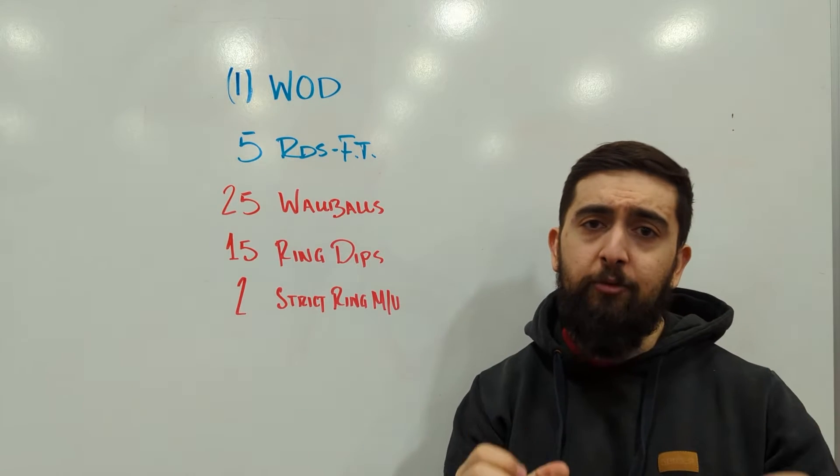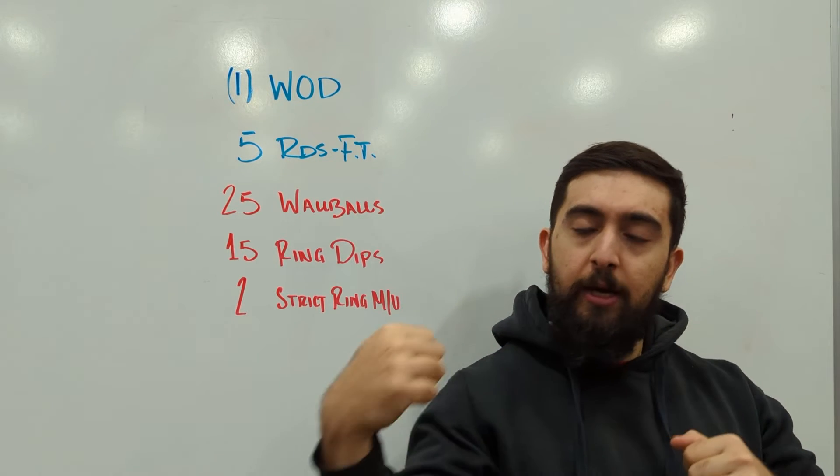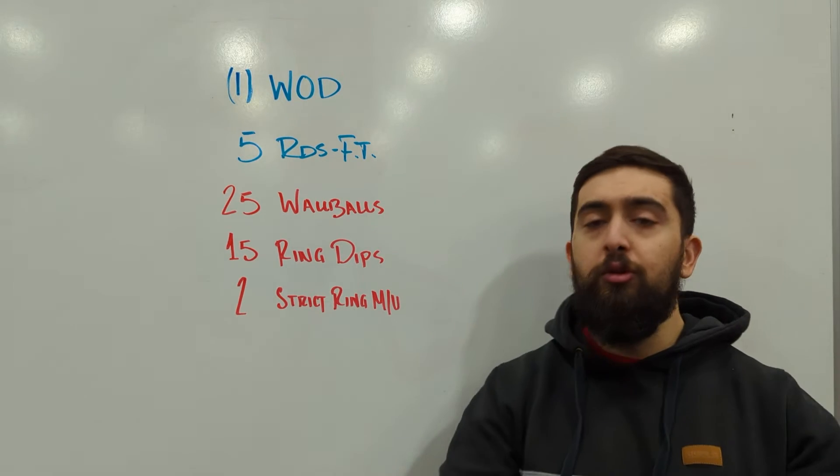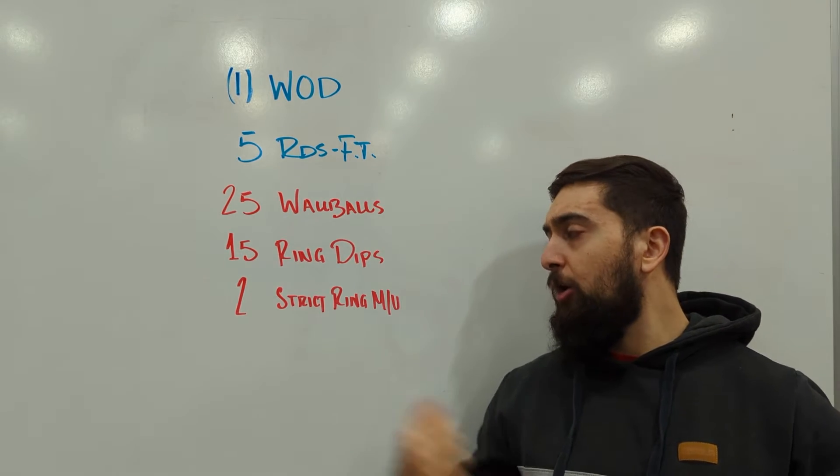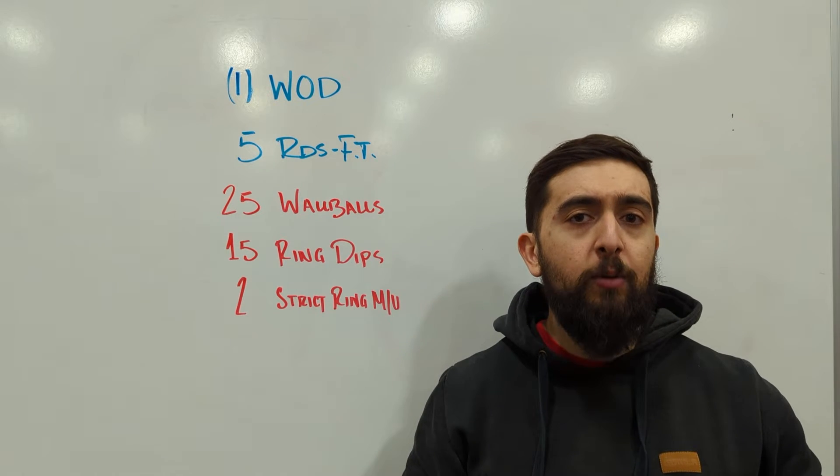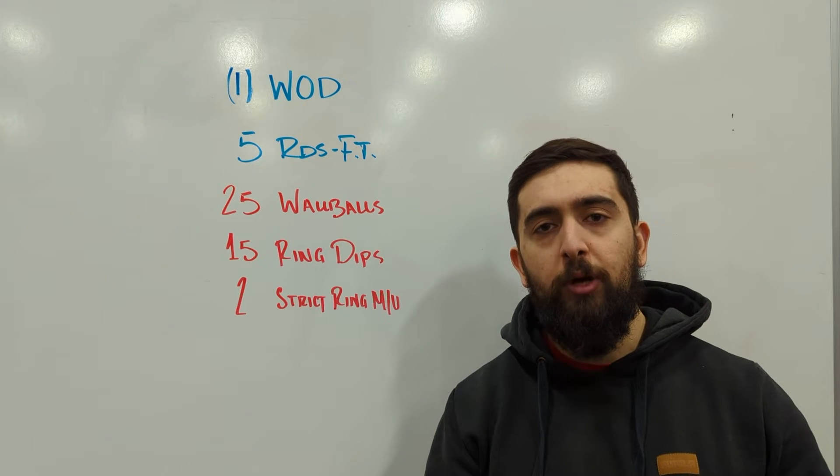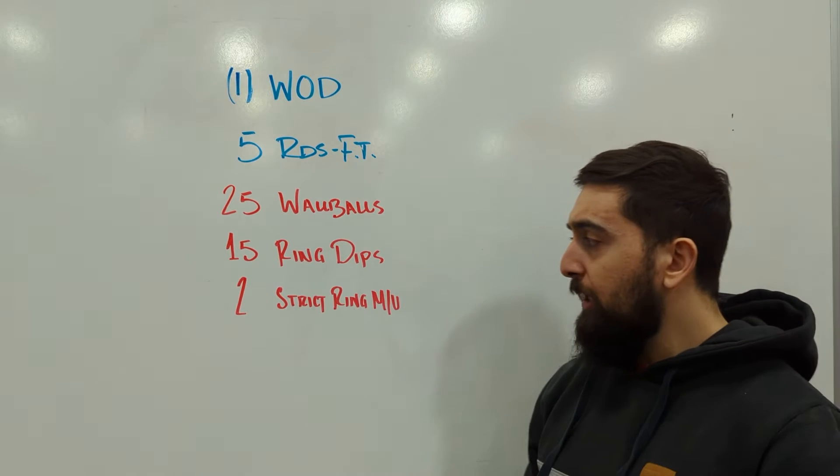So instead of grabbing the rings with a regular grip, try it with a false grip now. Go into that horizontal position and do two reps from there, or actually double this rep and go four reps, I would say, if you are just doing that horizontal ring progression, ring row progression.